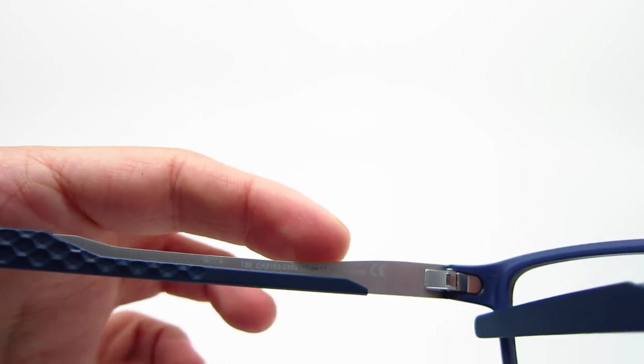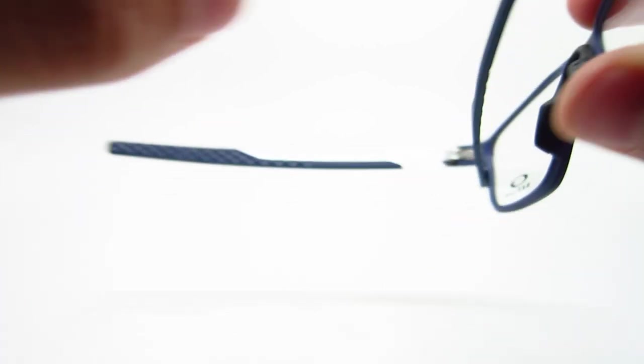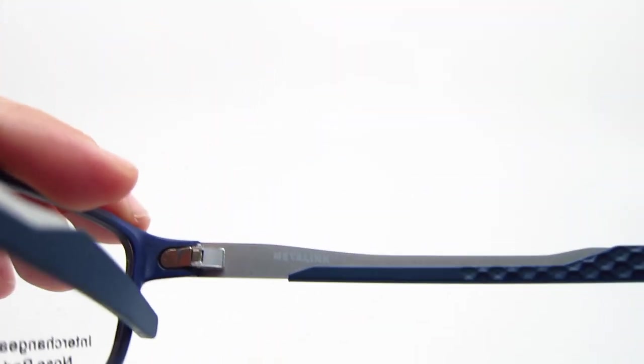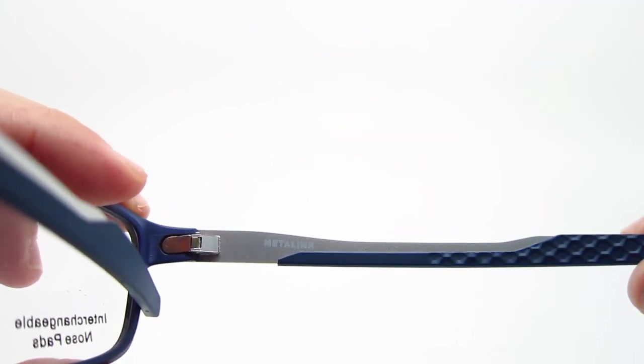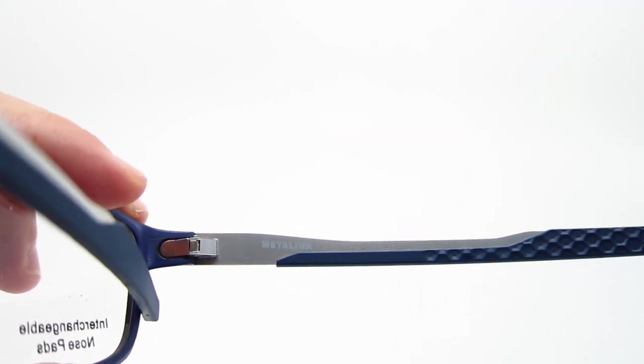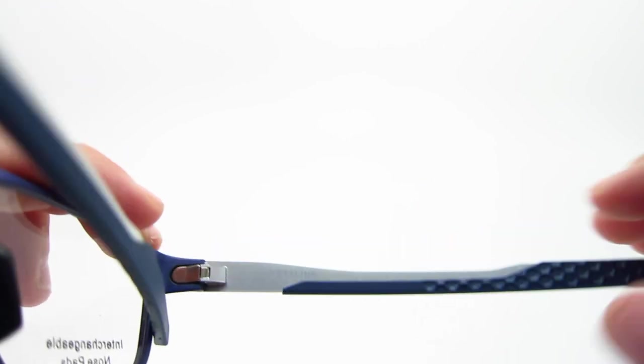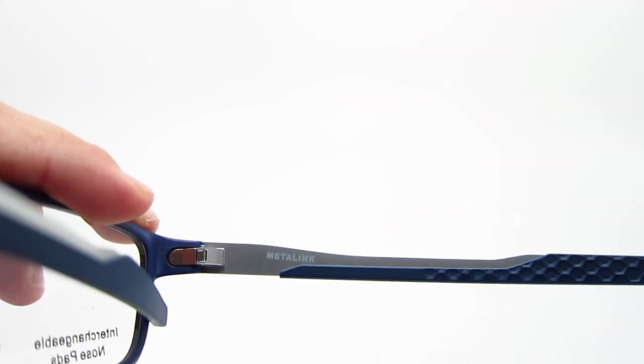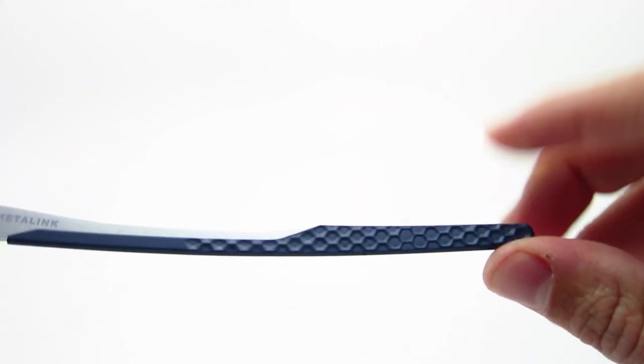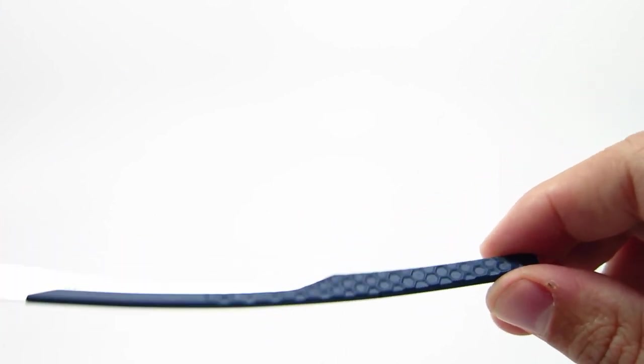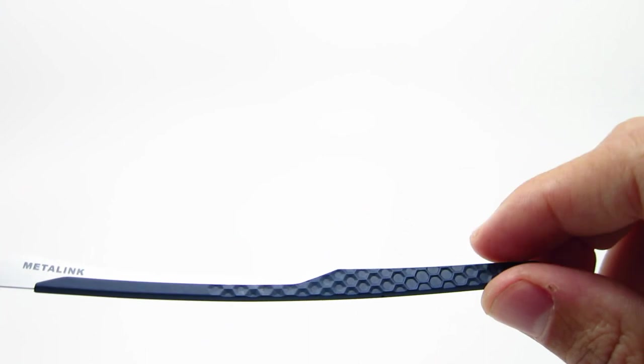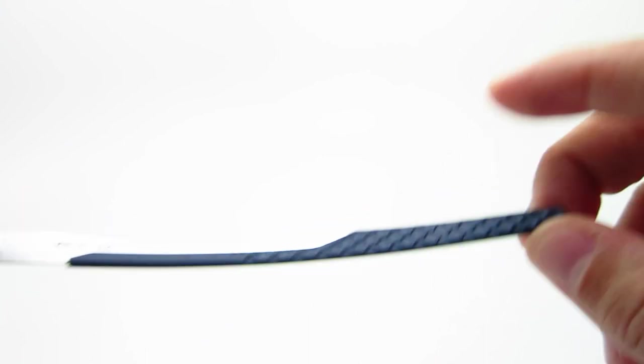And it also says matte denim on the frame. And on the other side it's going to say the model name. I'm pretty sure it's Metal Link, not Metal Ink. Yeah, but if you know, let me know. And it also has nice grooves here, so it doesn't fall off your face as easy. So it'll help with the grip. It's like a honeycomb pattern, it's nice.